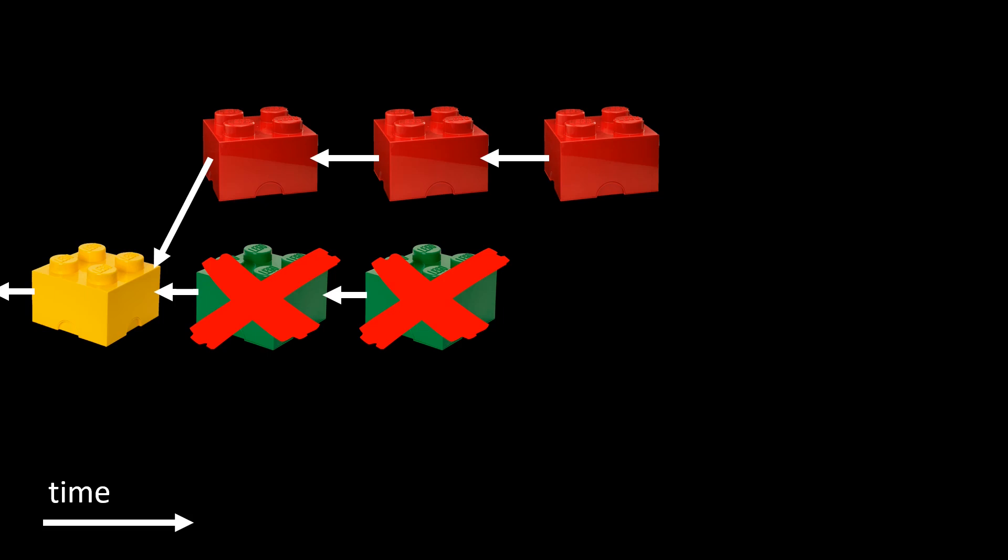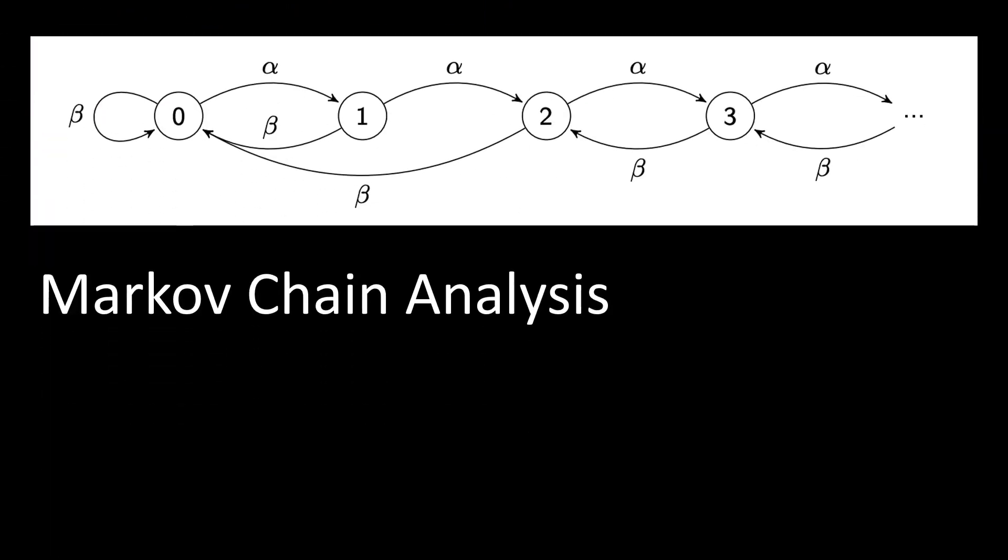So is this risky strategy paying off? Let's analyze it in more detail. What we see here is a so-called Markov chain. The Markov chain has states 0, 1, 2, 3, and so on.